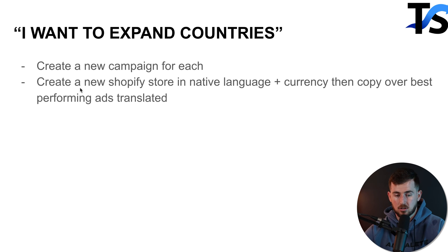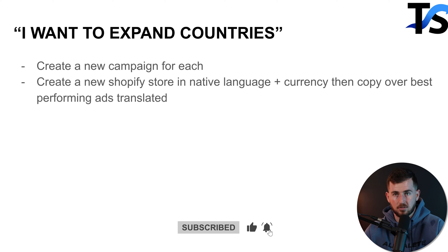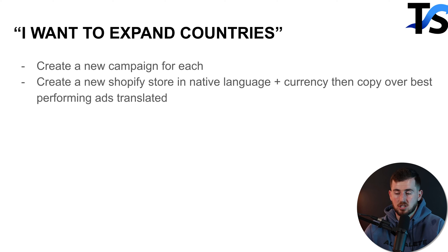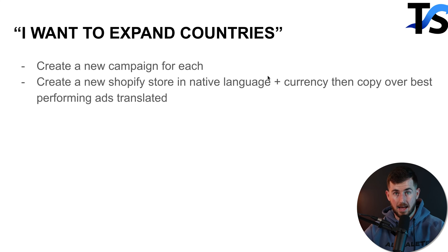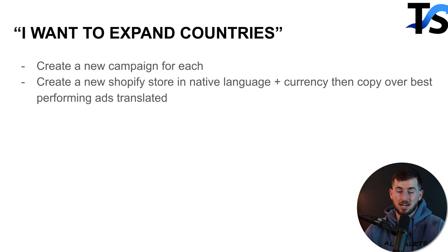To expand into new countries, create one new campaign per country. You must create a new Shopify store in the native language and native currency, then copy over the best-performing ads translated. The old way — just tossing small budgets at a country with English ads and US dollars — only reaches maybe 10% of people. If you launch in Dutch with a Dutch website and euro currency for Belgium, you reach 90% of people. Skip the translation apps; we always see much better conversion rates with a dedicated Shopify store per language, country, and currency. Only expand countries once you're already doing $50,000 to $100,000 a month in one country.